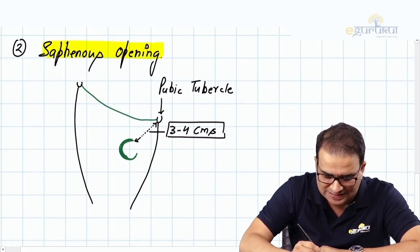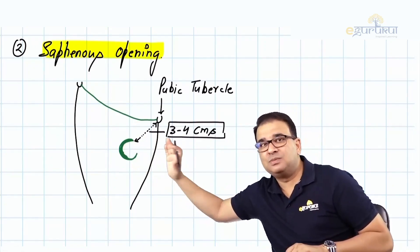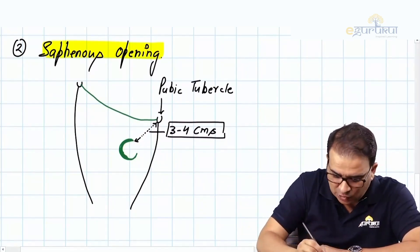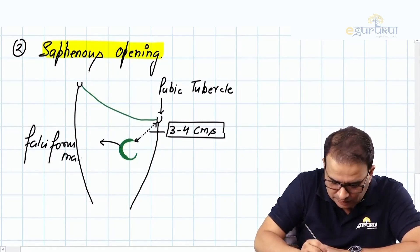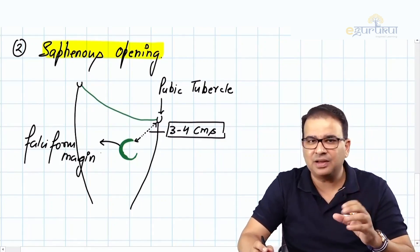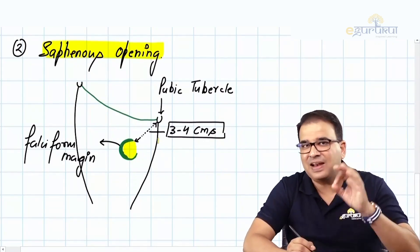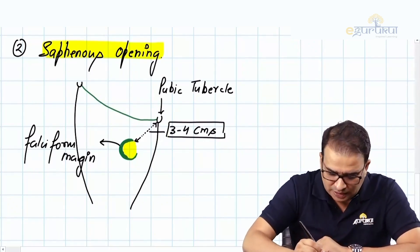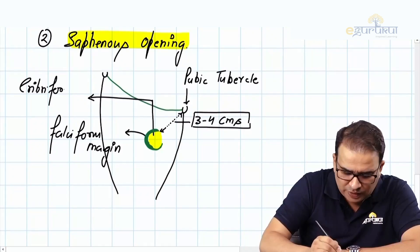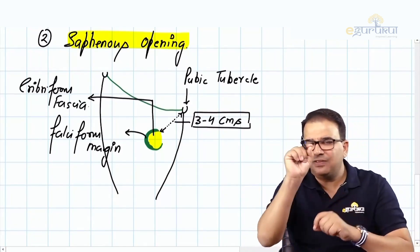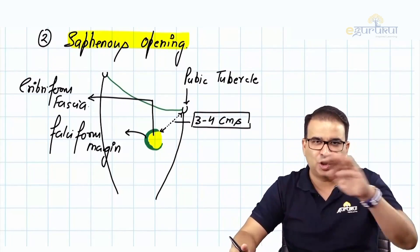The saphenous opening has a lateral margin that is crescentic and sharp — it is more superficial and is called the falciform margin. The medial margin is more deeply placed. The saphenous opening is covered with a sieve-like fascia called the cribriform fascia, which is also a modification of the fascia lata, similar to the cribriform plate in the anterior cranial fossa.